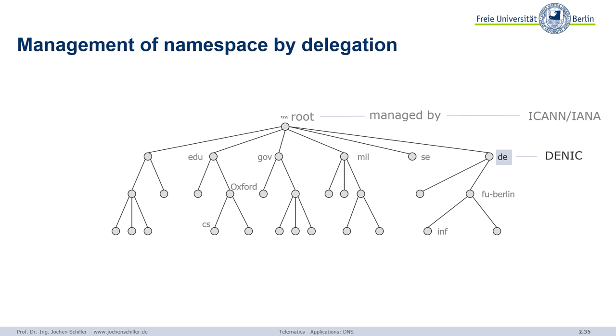They organize this and they make sure that on the next level — the second level — we again have unique names. But once they said you can use this unique name, it's out of their control what the next organization does within the next level. So our university can deal with all the third level and then we have a fourth level, and so on. This makes this complexity manageable because you can imagine how huge this tree is.